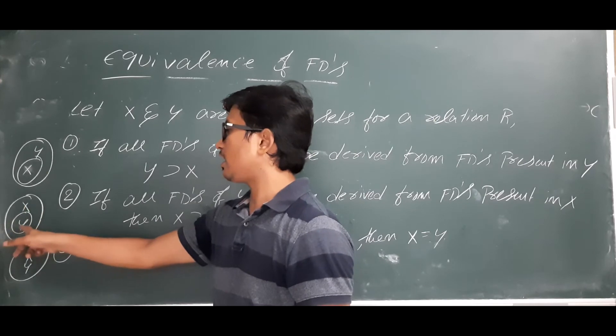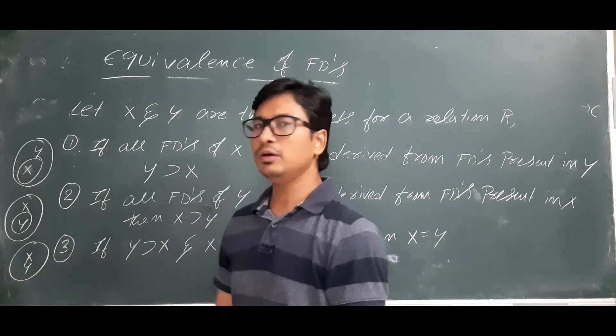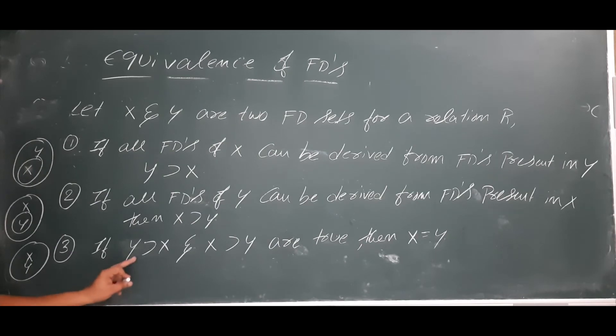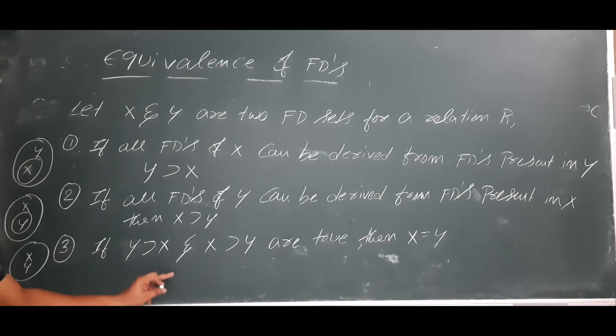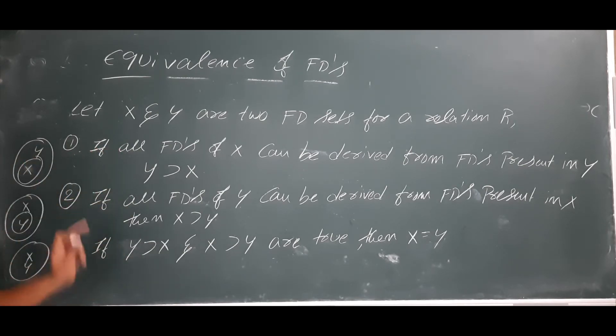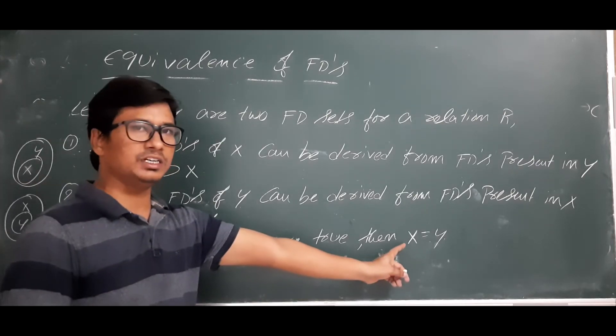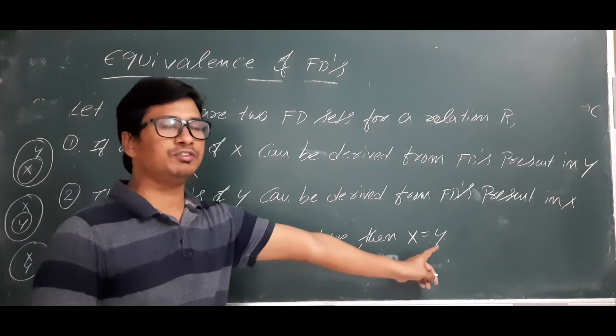Set of FD's X covers the set of FD's in Y. Now the third step is: if Y covers X and X covers Y both are true, meaning step one is true and step two is true, then I will say that the set of FD's present in X and the set of FD's present in Y are equal.